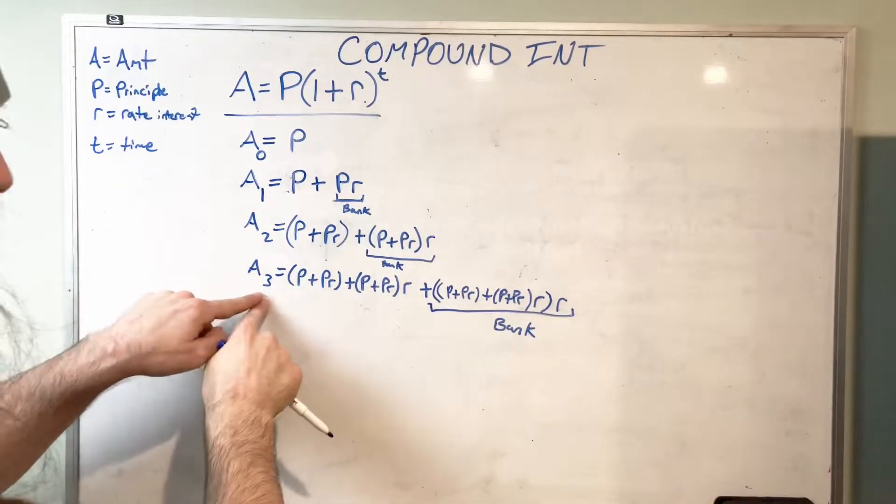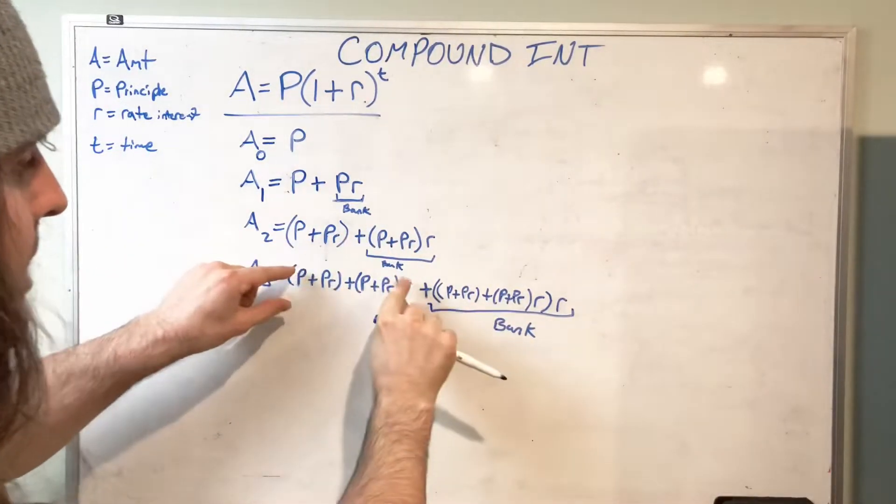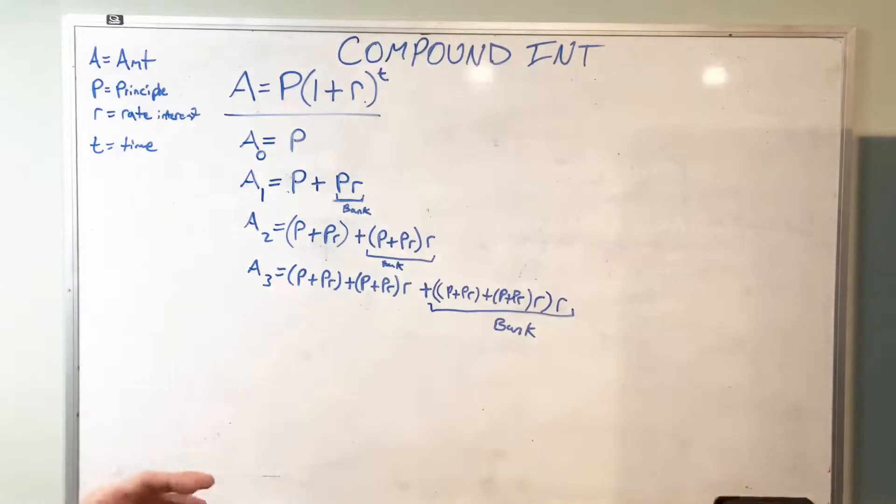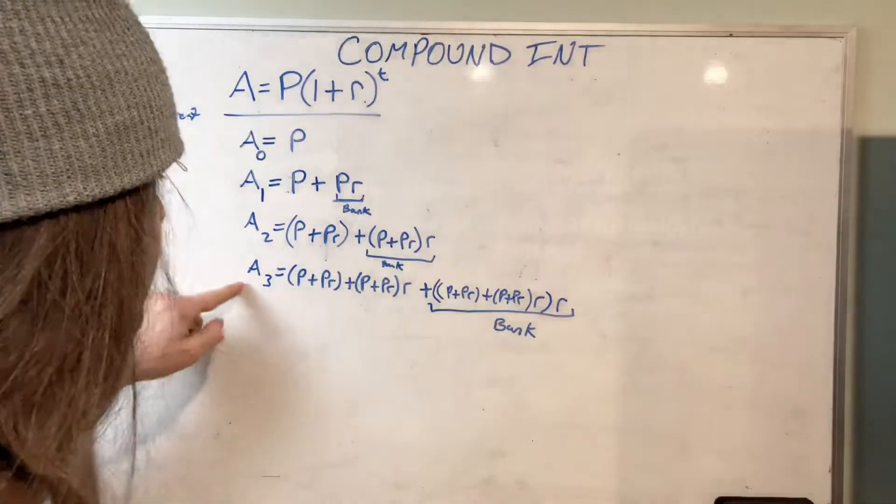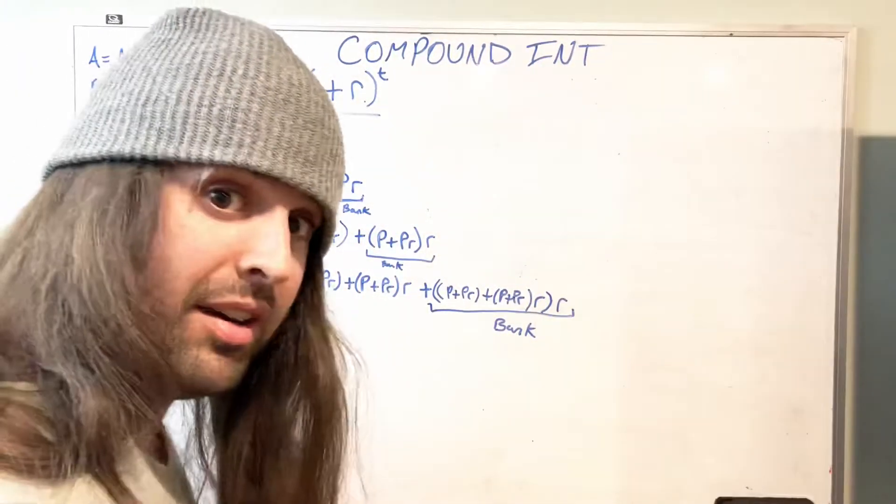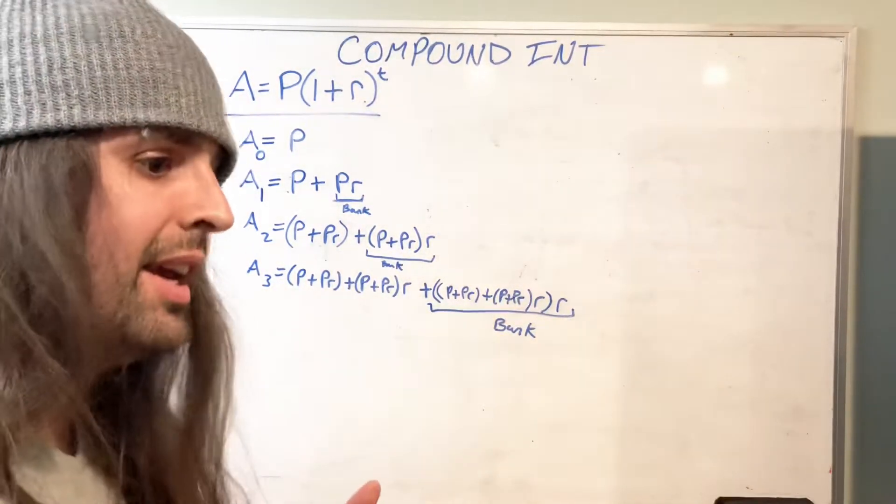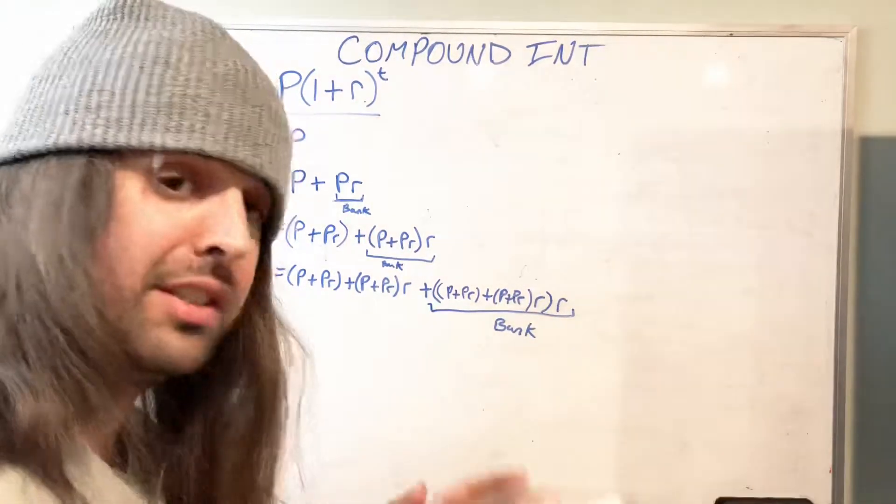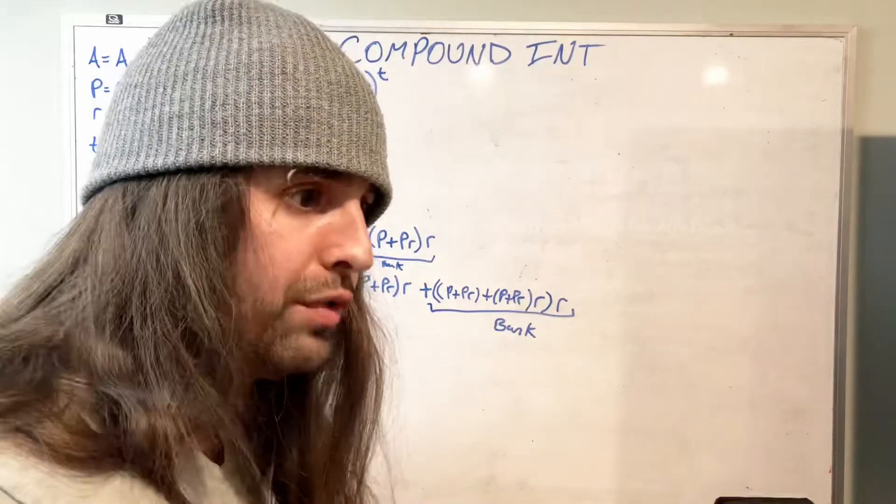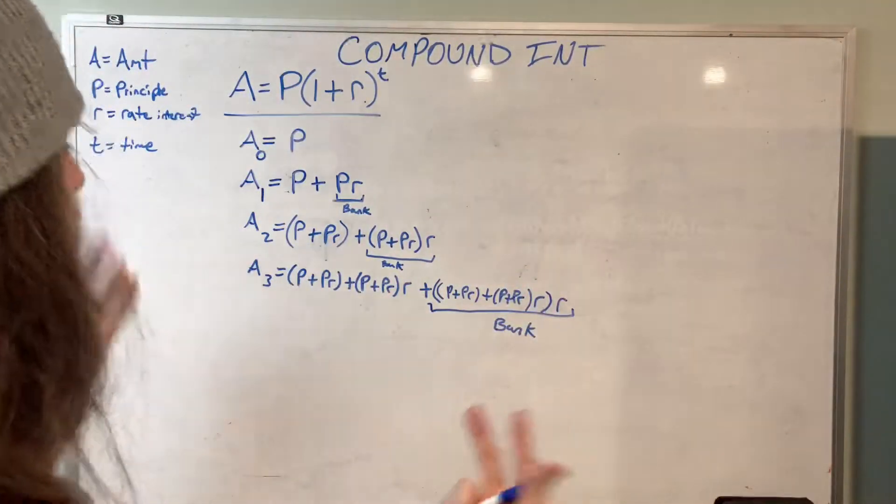After the second year, you're onto the third year. Now you have this whole amount in the bank, plus this whole amount times R again. And that's what the bank pays you. Ladies and gentlemen, if you've made it to A₃, you have enough data to derive this formula. It's almost like magic.